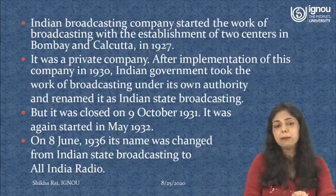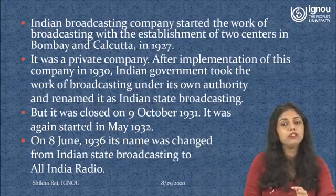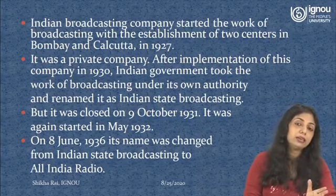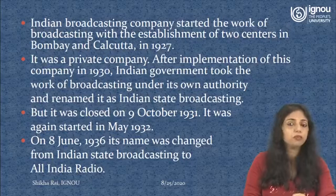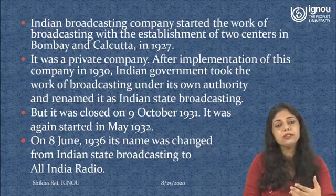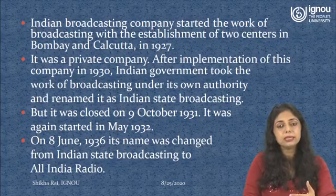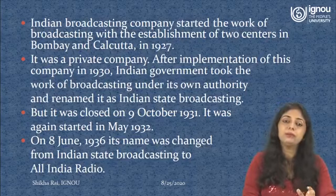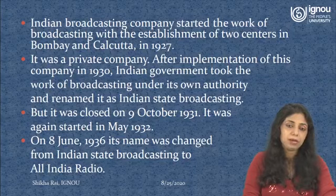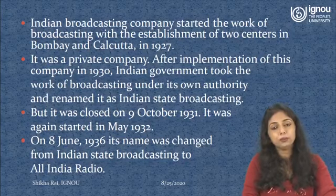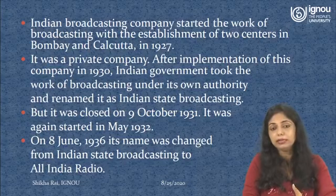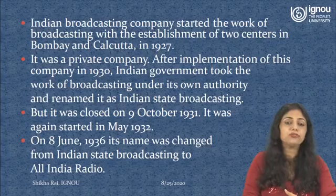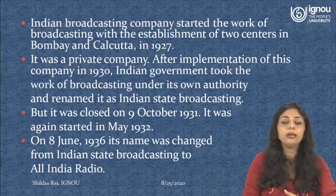The Indian Broadcasting Company started the work of broadcasting with the establishment of two centers in Bombay and Calcutta way back in 1927 during the British times. It was a private company, and after its implementation in the 1930s, the Indian government took the work of broadcasting under its own authority, renaming it as Indian State Broadcasting. It was closed down on 9th October 1931 and again started in May 1932.